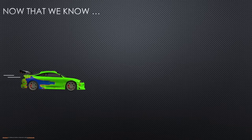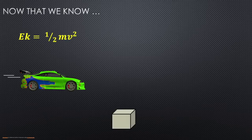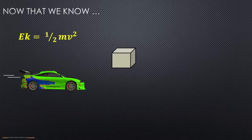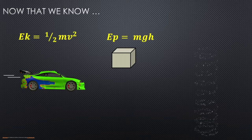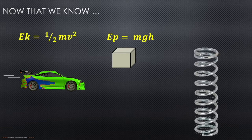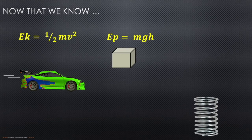we know that if you have a moving object that's kinetic energy and we calculate it with Ek = ½mv². If we have an object and we lift it up into the air, we know it's gained potential gravitational energy, and we calculate that with Ep = mgh. And in the last lesson, we saw that if we have a spring and we compress it, that's also another type of potential energy, calculated with Ep = ½kx².